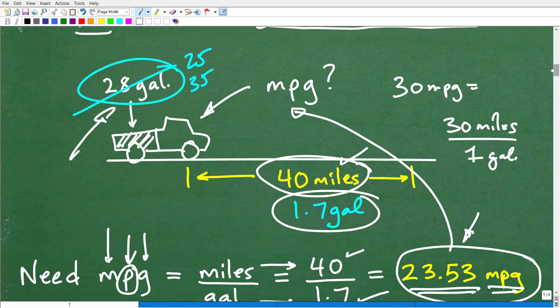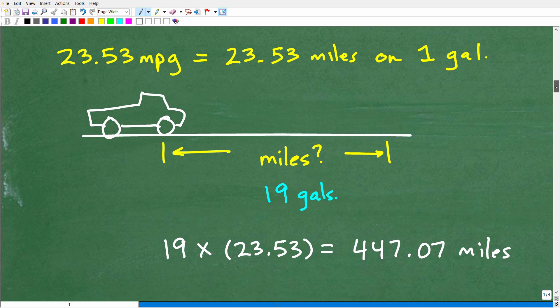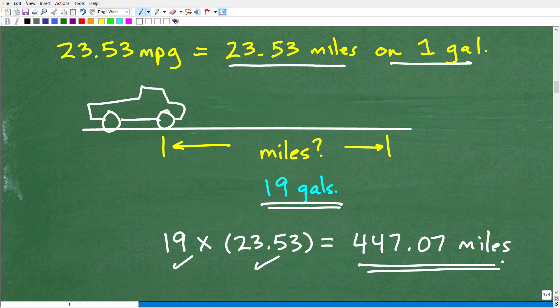But let's go ahead and figure this problem out now. So we know that this truck has a miles per gallon rating at this road condition, if you will, has 23.53 miles per gallon approximately. So that means it goes 23.53 miles on one gallon. So how many miles will go on 19 gallons? Easy. Just take that 19 and multiply by 23.53. And we are going to get 447.07 miles. So that is the answer.